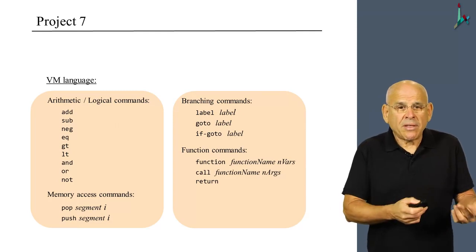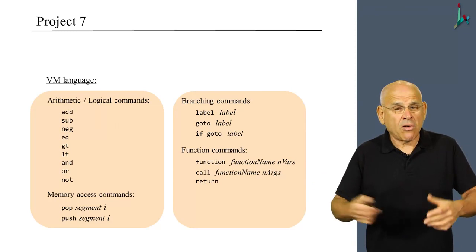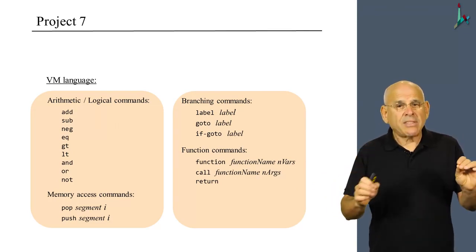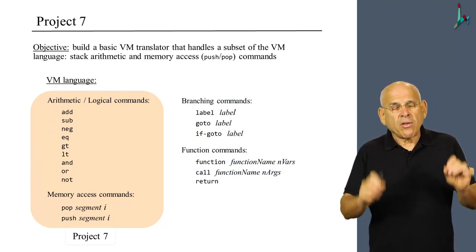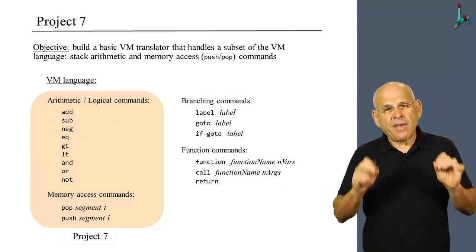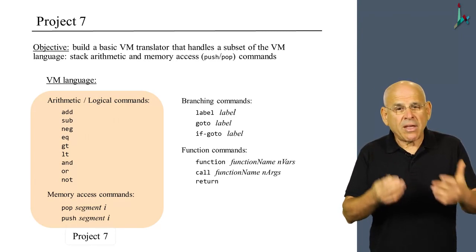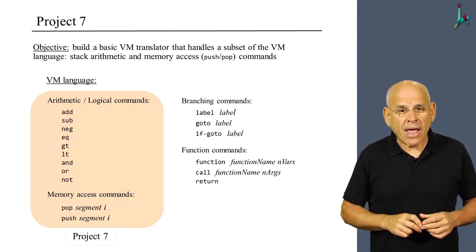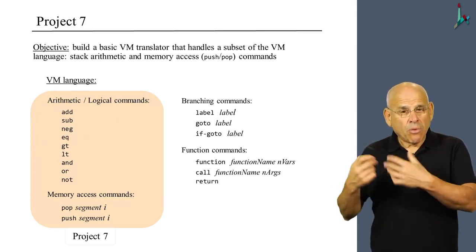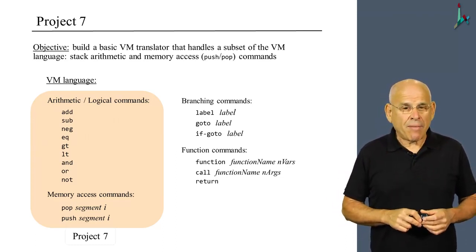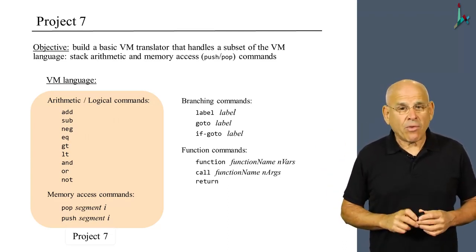The VM code is written in the VM language, and the VM language consists of four categories of commands. In project seven, we're going to focus only on the first two. So we're going to develop a basic VM translator capable of translating VM programs that include arithmetic, logical, and memory access commands into machine language. In the next project, project eight, we're going to deal with the rest of the VM language and complete the picture of building the full-blown VM translator.